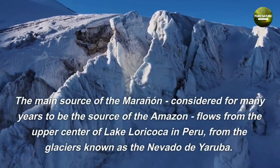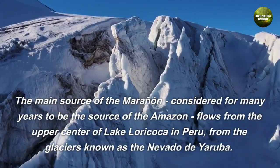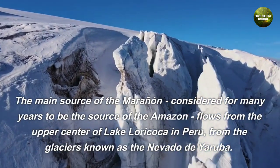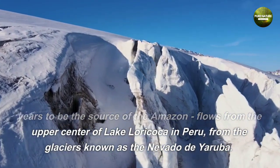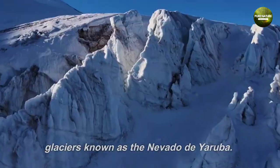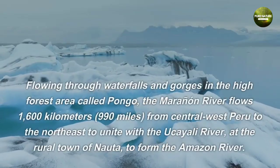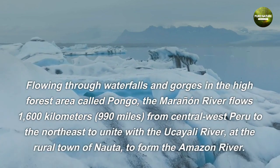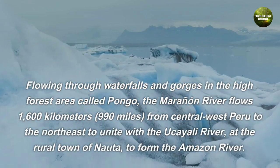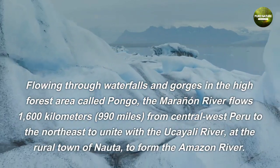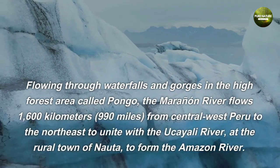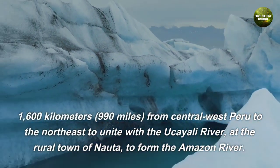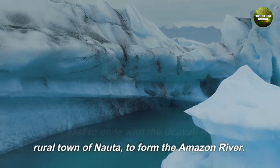The main source of the Marañon, considered for many years to be the source of the Amazon, flows from the upper center of Lake Loricoca in Peru, from the glaciers known as the Nevado de Yoruba. Flowing through waterfalls and gorges in the high forest area called Pongo, the Marañon River flows 1,600 kilometers (990 miles) from central west Peru to the northeast, to unite with the Ucayali River at the rural town of Nauta, to form the Amazon River.